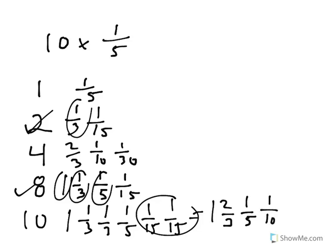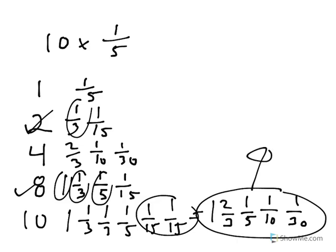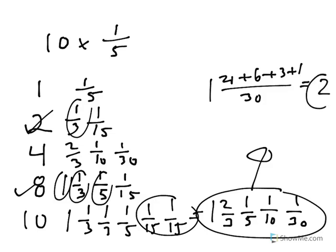So, the one-fifth there. And at this point, we could just do common denominator of thirty. So, twenty over thirty plus six over thirty plus three over thirty plus one over thirty just becomes two. That whole thing becomes thirty over thirty. So, it's two. And ten times one-fifth is two, as we know.